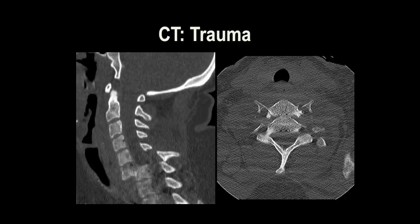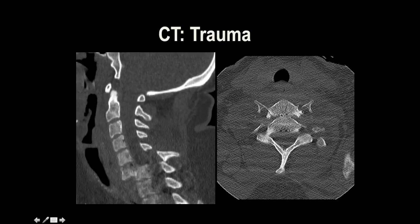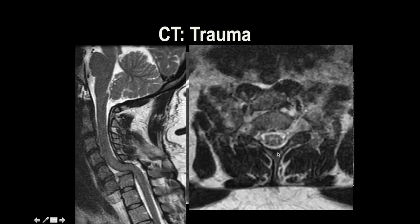Here's a more severe case — a fracture dislocation. The spinal canal is obviously distorted, so we're definitely concerned for spinal cord involvement. You can see on the reformats how easy it is to distinguish the injury. On the axials we also see it, but it's so grossly disrupted you might wonder whether this is artifact or not. You see one vertebral body and then the second one, and there's a piece of bone here.